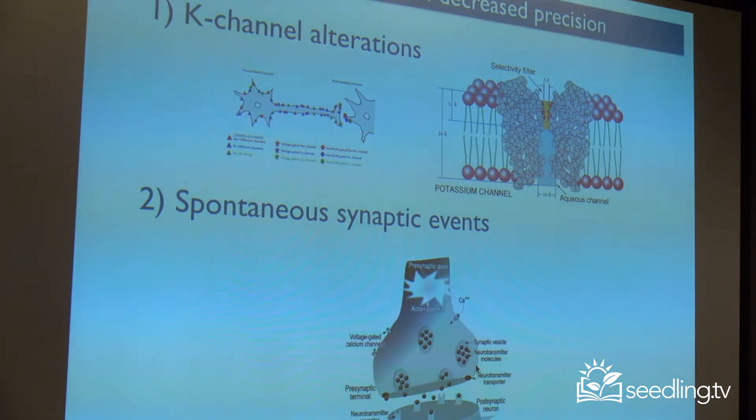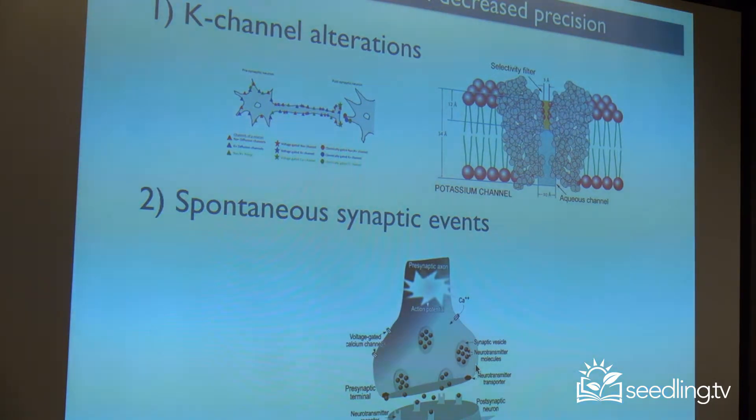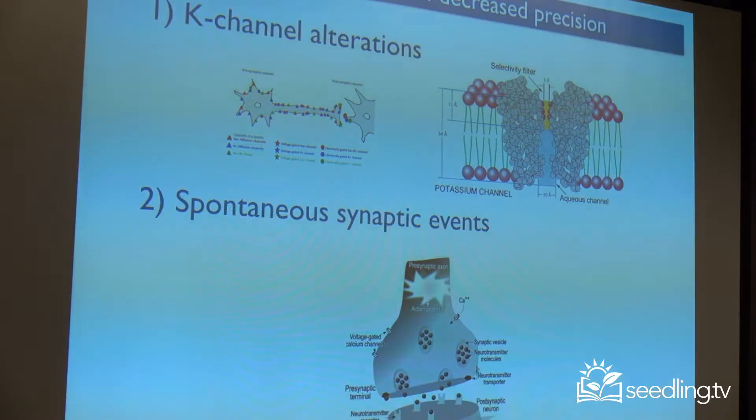Or it could be a problem with the synapse. The synapse is the place where one neuron contacts the next neuron as part of a circuit. This contact is not structural — there's a space between them, and neurotransmitters have to jump across the space to activate the next neuron. And when too many neurotransmitters are released into the space and activate the next neurons, you get a noisy neuron.